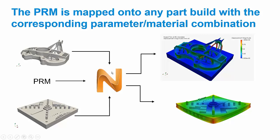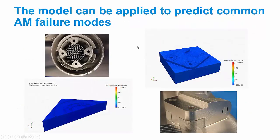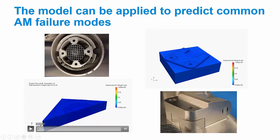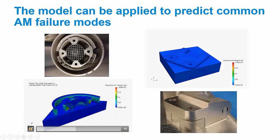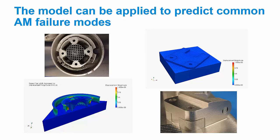In addition to getting distortion predictions — which are useful because you can see if the part is distorted out of tolerance — you can also use those predictions to predict other common failure modes. For the example shown earlier of a part deflecting upward into the recoater blade, we can use distortion predictions to investigate why this happens. You can see the overhang on this part lifts up in the positive Z direction in the simulation, and it actually outputs a warning saying you're going to hit the recoater blade. A design engineer then knows whether to redesign that feature or anchor it down with support structures.